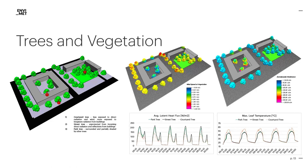However, courtyard trees — indicated by number one here — experience less wind speed than stand-alone trees at a street or in a park. The humid air cannot be transported away as fast as the air around the other trees in the analysis. Leaf temperatures further increase and the latent heat flux is reduced. The tree's cooling effect is hence strongly reduced by its urban setting.